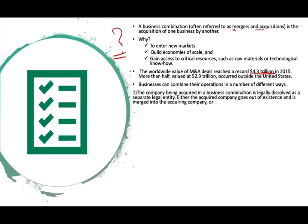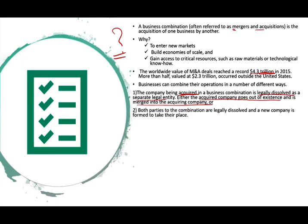The company being acquired in a business combination can be legally dissolved as a separate entity. Either the acquired company goes out of business and is merged into the acquiring company, or both companies are legally dissolved and a new company is formed — for example, company A buys company B and now they form company C.